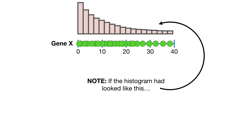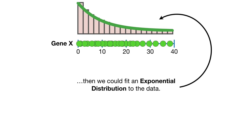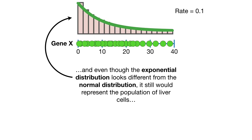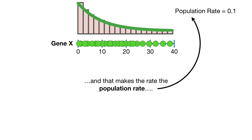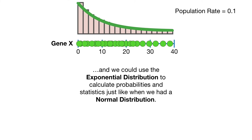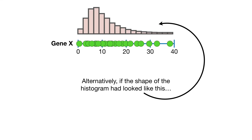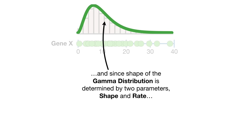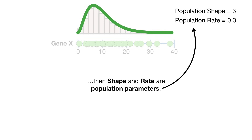Note, if the histogram had looked different, then we could fit an exponential distribution to the data. The shape of an exponential distribution is determined by the rate, which in this case equals 0.1. And even though the exponential distribution looks different from the normal distribution, it would still represent the population of liver cells, and that makes the rate the population rate. Alternatively, if the shape of the histogram had looked different again, then we would fit a gamma distribution to the data. Since the shape of the gamma distribution is determined by two parameters — shape and rate — then shape and rate are population parameters.